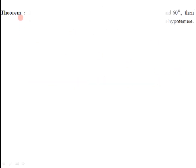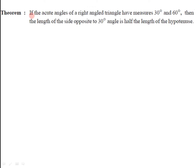First of all, let us have the statement of the theorem. If the acute angles of a right angle triangle have measures 30 degree and 60 degree, then the length of the side opposite to 30 degree is half of the length of the hypotenuse. This is the first part of the theorem.